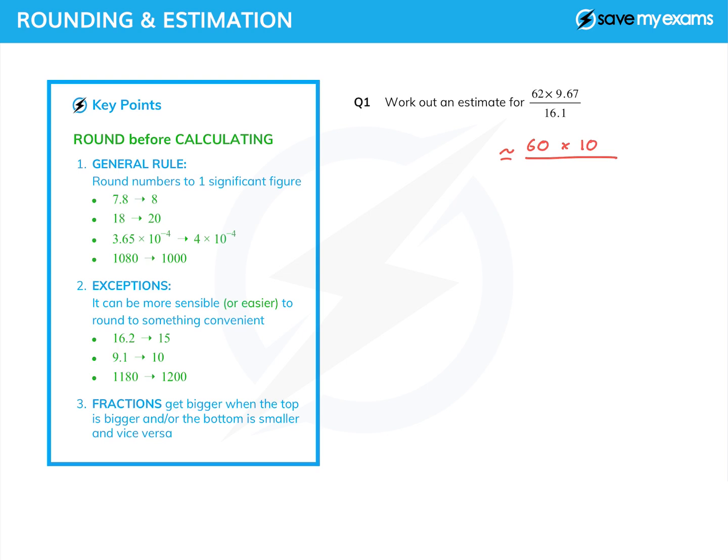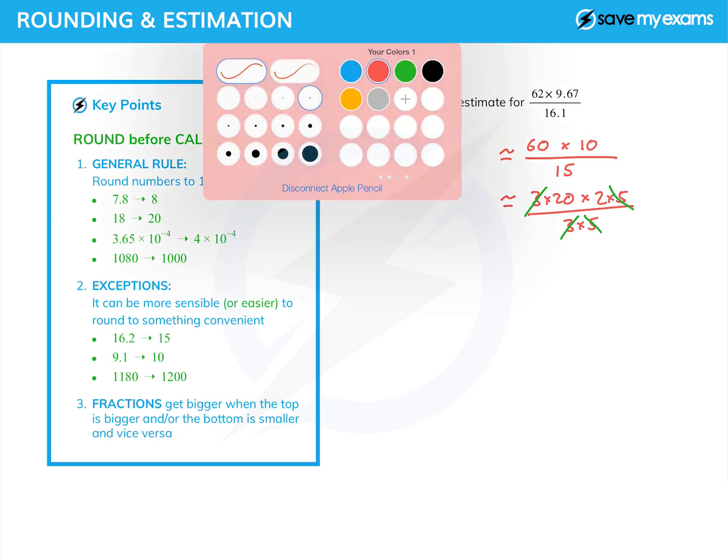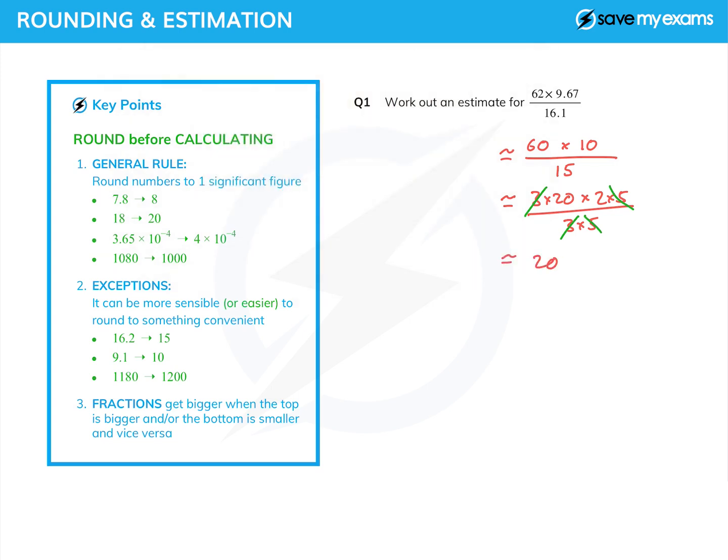Now 16.1 is one of those exception things, let's call it 15. I can see that 15 goes into 60 very nicely, so it's actually very easy to work with. Now we just get it in a state where we can cancel. I'm going to call 60 three times 20, and 10 is 2 times 5, and 15 is 3 times 5. Now it's fairly clear what cancels. I've got a 3 on the top and the bottom, I've got a 5 on the top and the bottom, and I just get left with 20 times 2 which is 40.